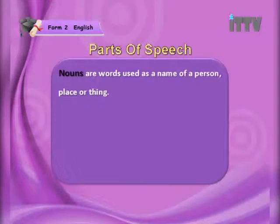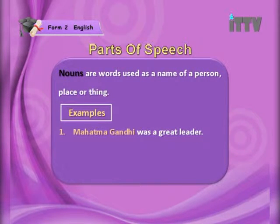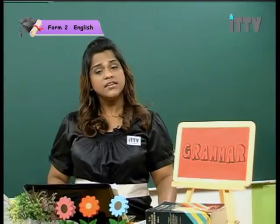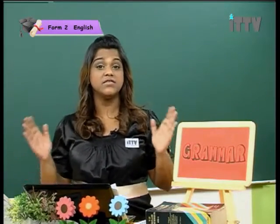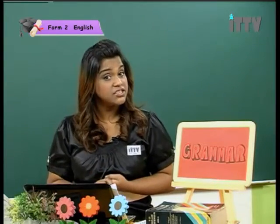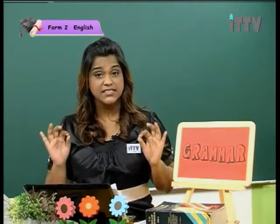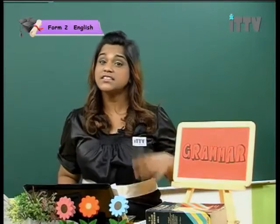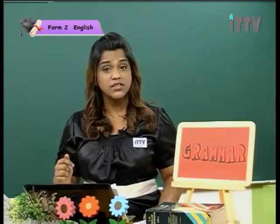Nouns are words used as a name of a person, place or thing. Now students, for your knowledge, under the heading for things, included are the objects that we can see, hear, taste, touch or smell. And sometimes it is things we can think of but cannot be perceived by our senses. For example, the word love is a noun — it is a word but you cannot see it. Let's go on to the next part of speech.